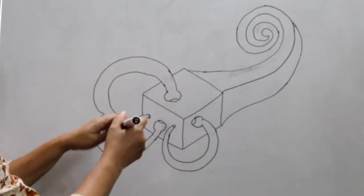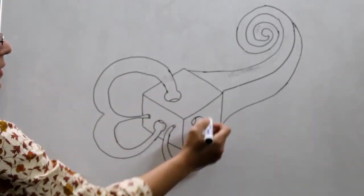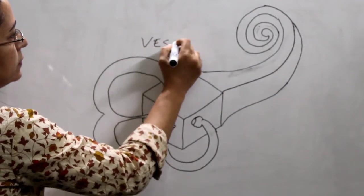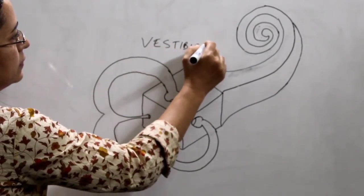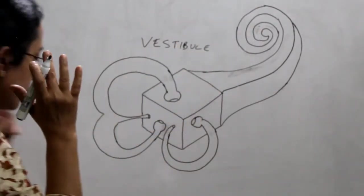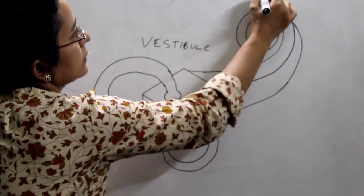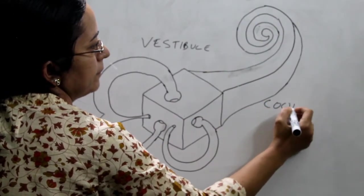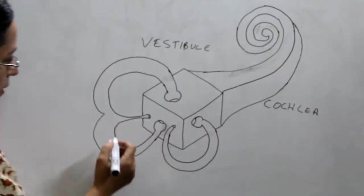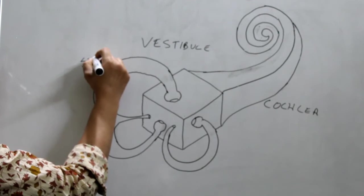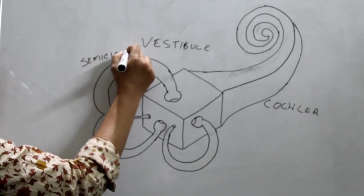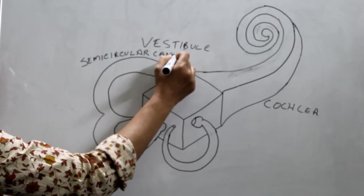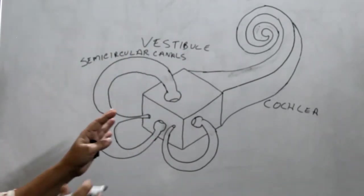This central portion — this part — is the vestibule. The anterior turning is the cochlea. And here is the semicircular canal.